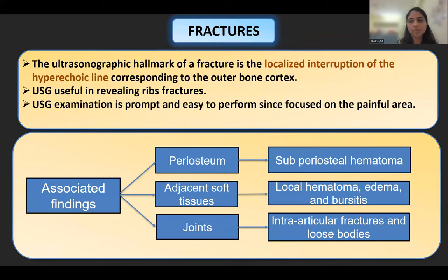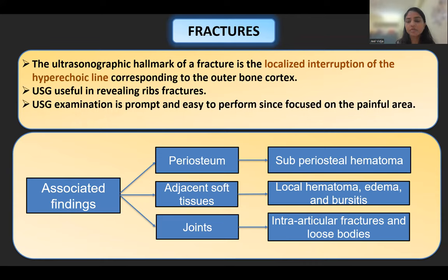The first case concerns rib fractures. The ultrasonography hallmark of a fracture is the localized interruption of the hyperechoic line corresponding to the outer bone cortex. Ultrasonography is useful in evaluating rib fractures because it is prompt and easy to perform, focusing on the painful areas.